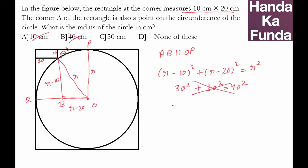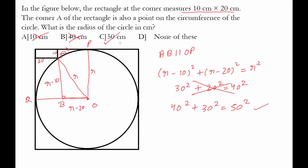Let's try with 50, which gives 40 squared plus 30 squared equals 50 squared. Since 3, 4, and 5 form a Pythagorean triplet, 30, 40, 50 also form a Pythagorean triplet. This means the answer is correct, which essentially means option C is the answer.